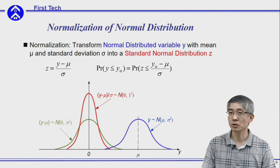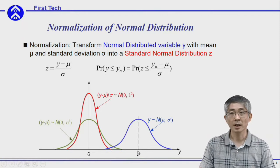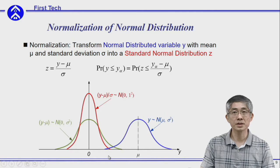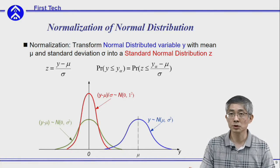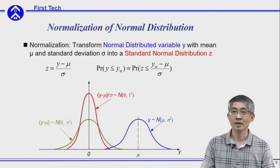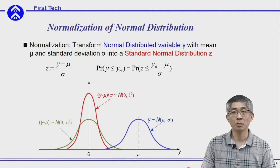It's not always the case that your distribution is a standard normal distribution. What if your distribution has a mean mu and a standard deviation sigma, like the blue line shown here? Then you won't be able to use the previous standard normal distribution table to find the cumulative probability you require. Certainly, if you are using Microsoft Excel functions, it won't be a problem.